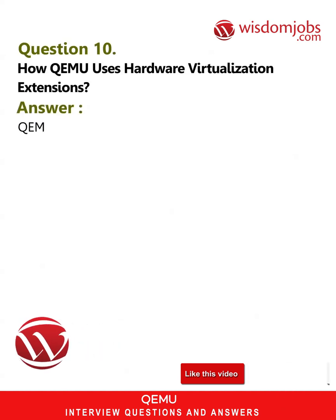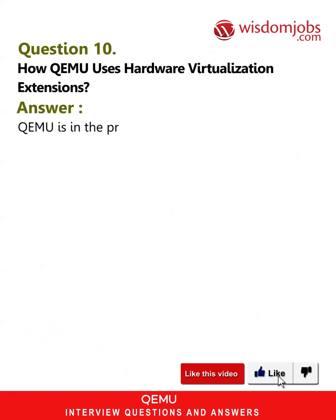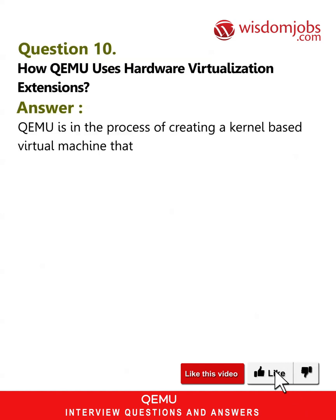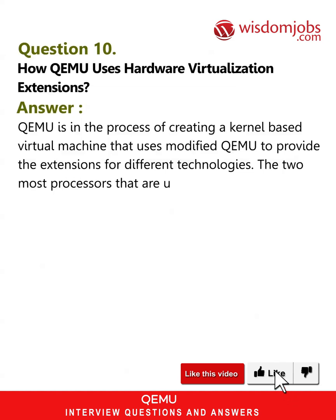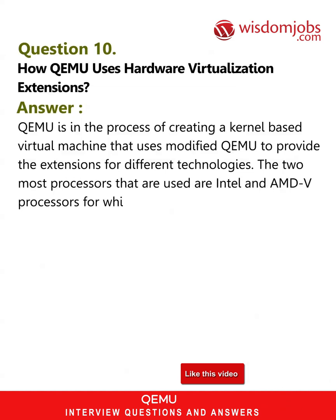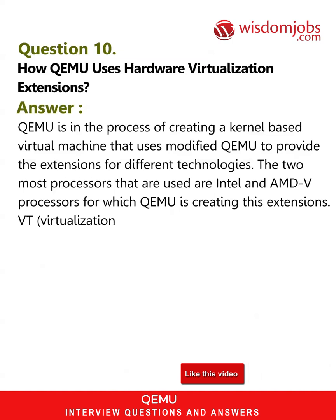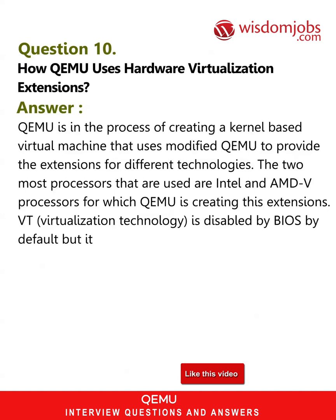Question 10: How does QEMU use hardware virtualization extensions? Answer: QEMU is in the process of creating a kernel-based virtual machine that uses a modified QEMU to provide extensions for different technologies. The two most common processors used are Intel VT and AMD-V processors, for which QEMU is creating these extensions. Virtualization Technology (VT) is disabled by BIOS by default, but it can be enabled from the BIOS menu to turn on all functionalities of QEMU.